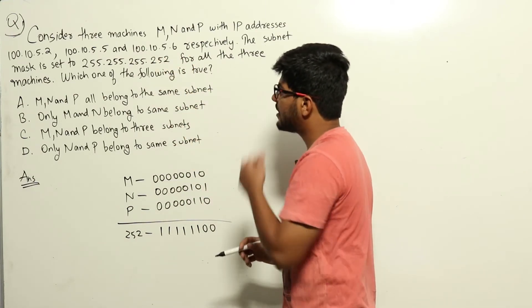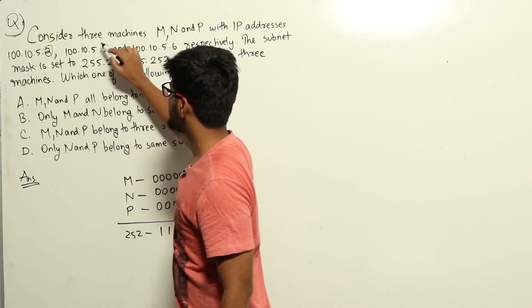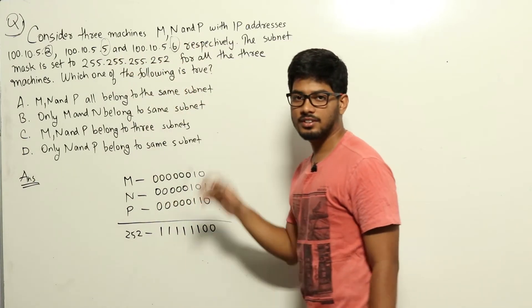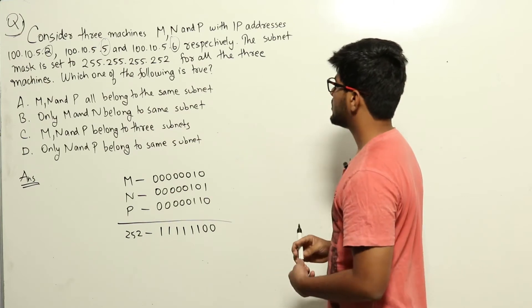In that part, the network ID won't differ. Only in the last 8 bits—for the first one it is 2, second one it is 5 and third one it is 6—only in the last 8 bits we need to check to see whether these belong to different subnets.